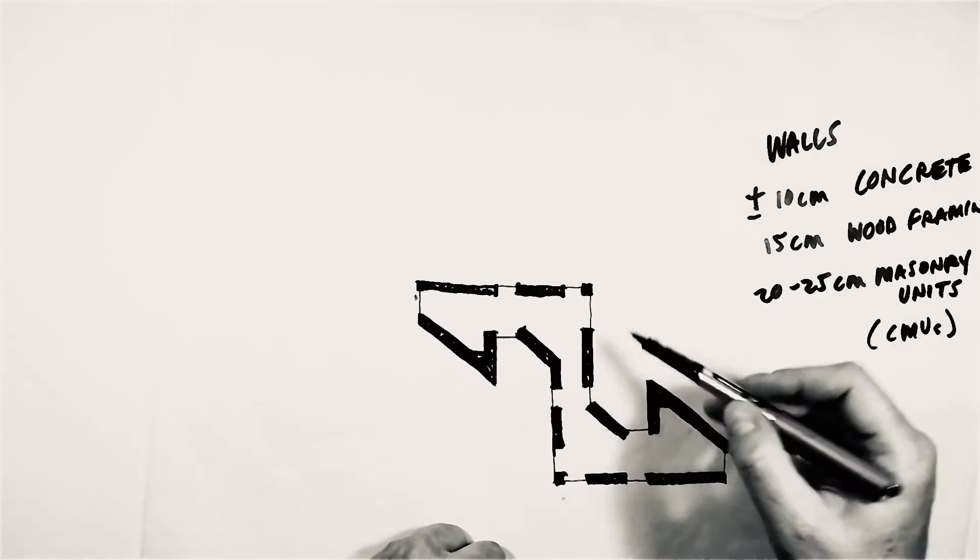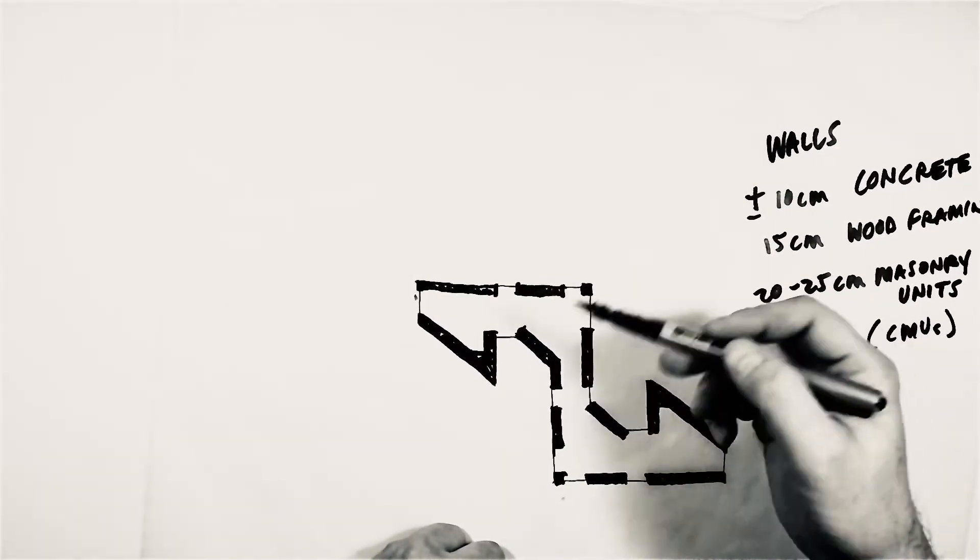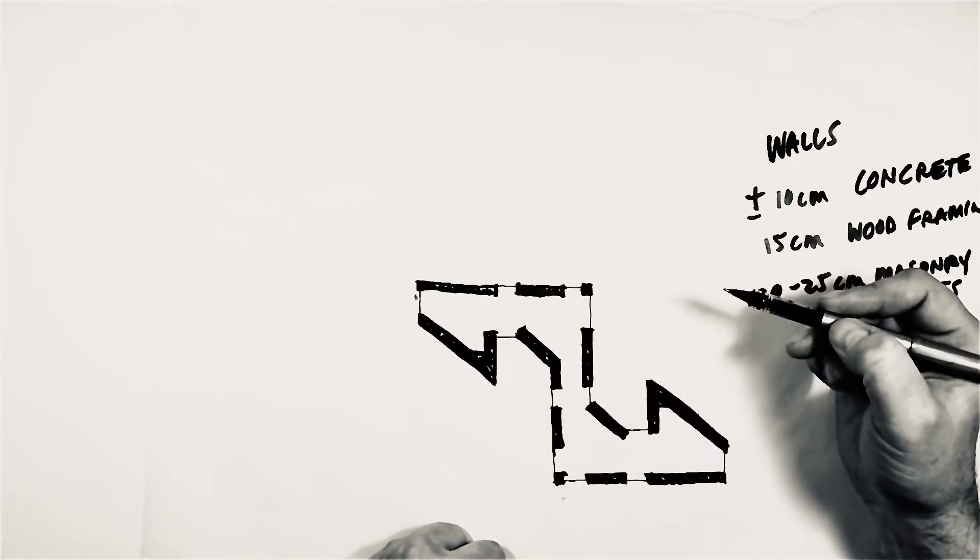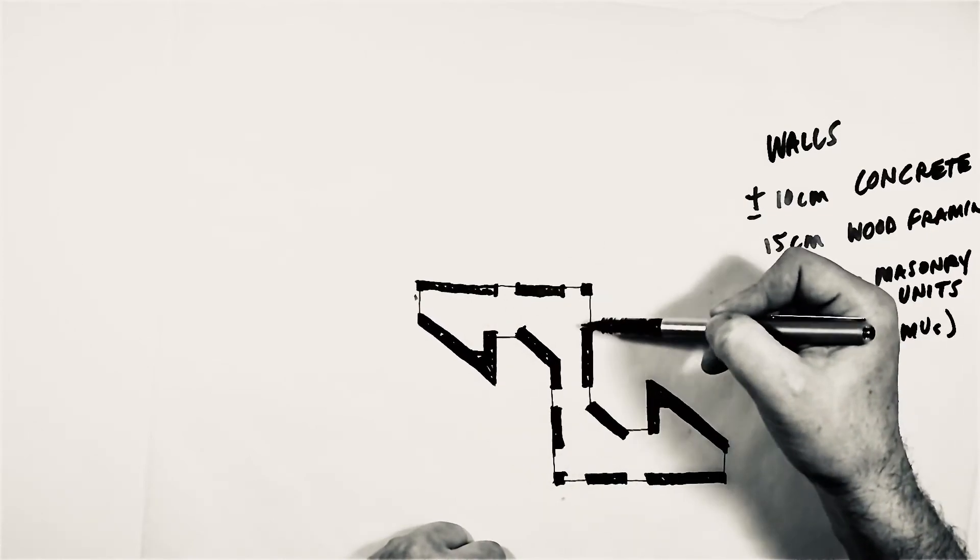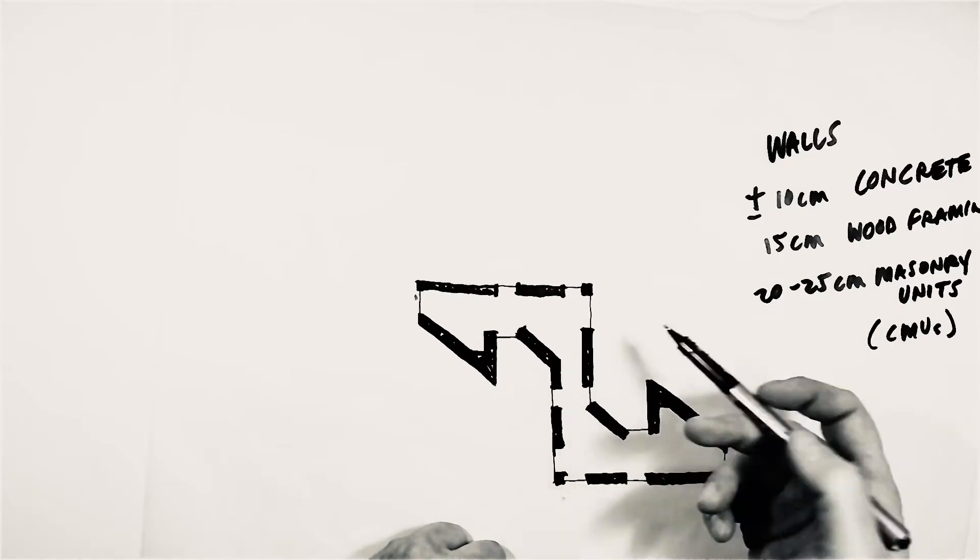So everything outside of that line, that light line that I drew first, is the ground. So now I'm going to determine where my threshold is, which should just be one line. And then I'm going to add an interior line for all of these apertures, so that you understand there is a ledge there that is raised up above the floor.